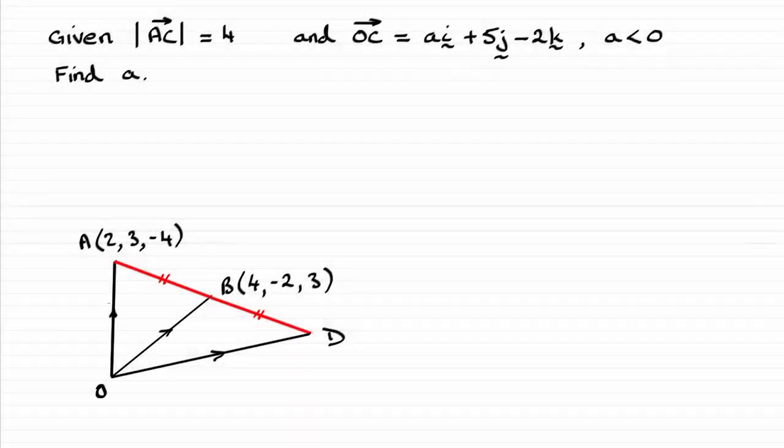OK, so for this part of the question, we have been given the vector OC in terms of this value A, where A is less than zero, and also given that the modulus, the distance from A to C is 4 units, so we've got to find A.